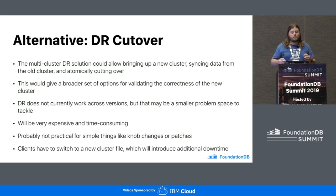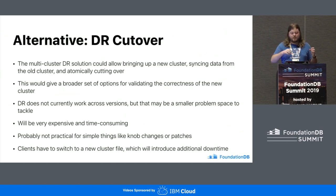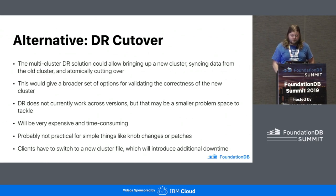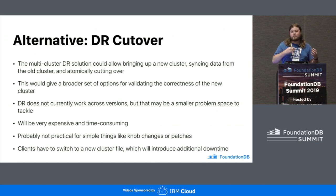Another strategy is doing a DR cutover. We have a multi-cluster DR solution that allows you to have a secondary cluster that's kept up to date within a few seconds with the primary cluster. So you could bring up a new cluster on the new configuration, set up a DR relationship, do a DR switchover, and then make that your new cluster that clients are connecting to. This doesn't work across versions right now, but it's a smaller problem space likely to be tackled as part of the RPC layer work. It's also very expensive because you have to copy all of your data to a new cluster, but it could be a good way to do version upgrades in the future.